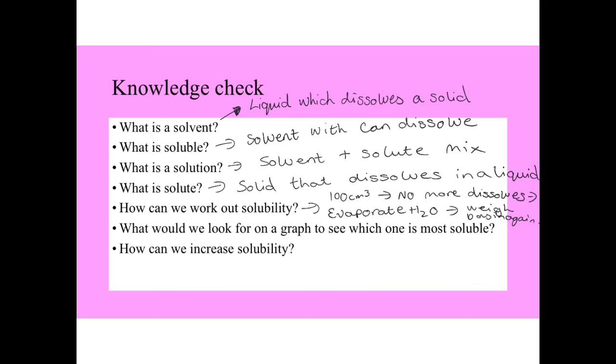How would you look at a graph to see which one is the most soluble? It will be the one that has the highest curve, the steepest curve. How can we increase solubility? Normally by increasing the temperature. It doesn't always work with every solute, but most solutes will dissolve quicker as the temperature of the solvent increases.